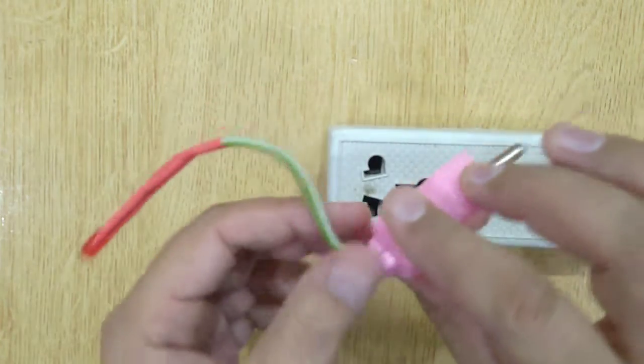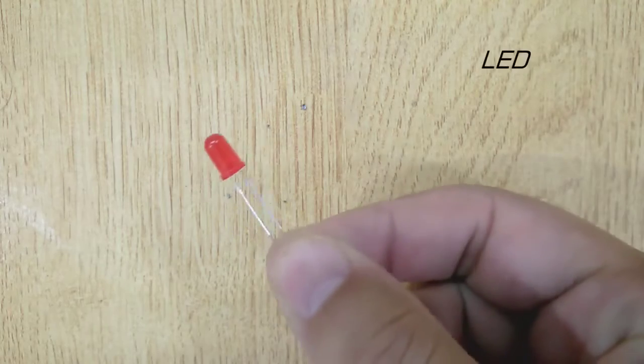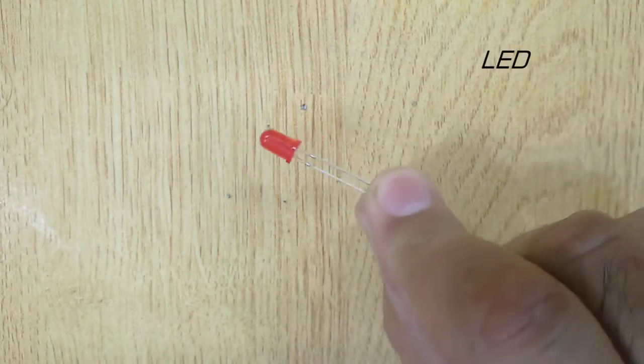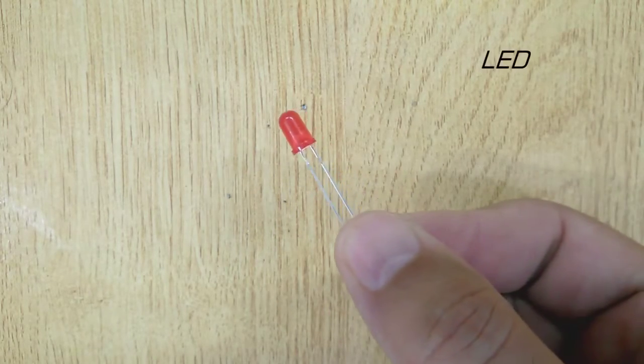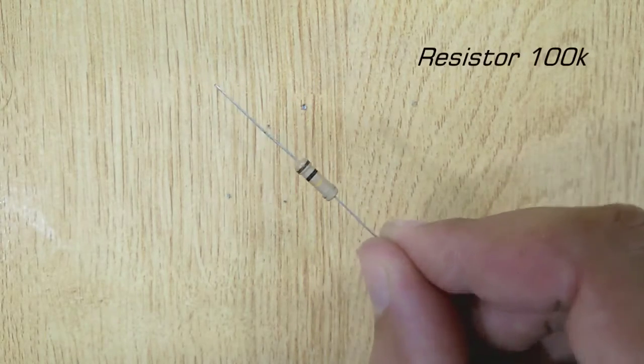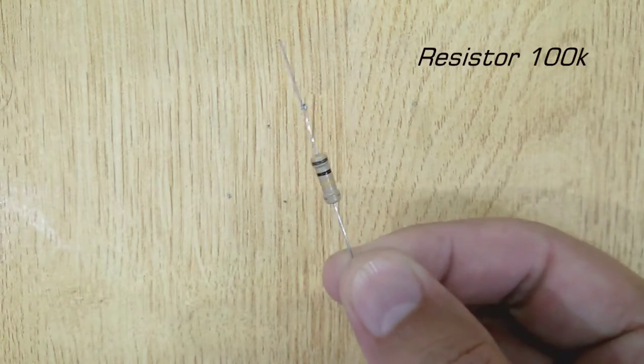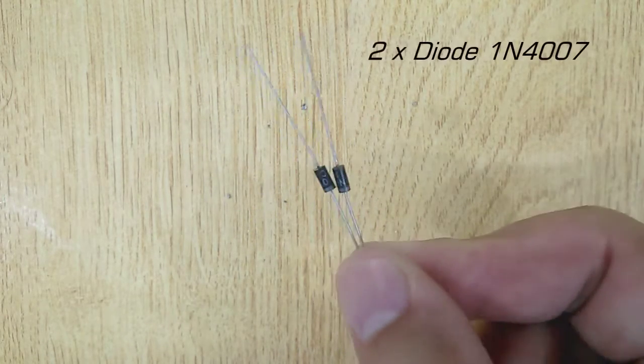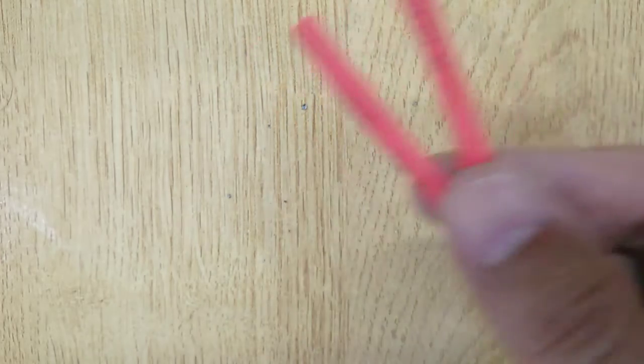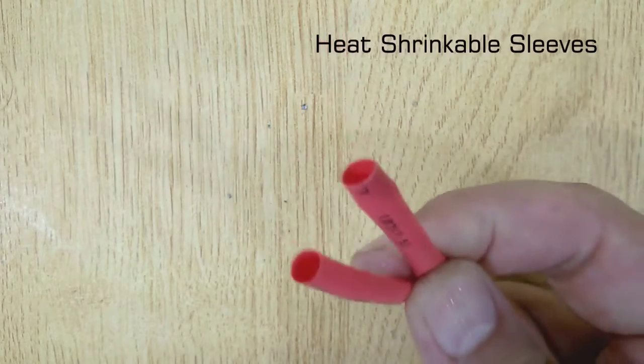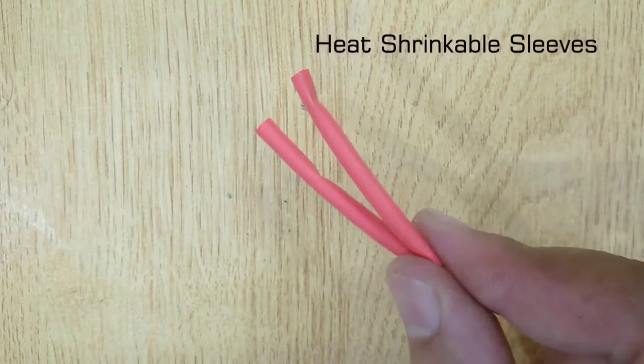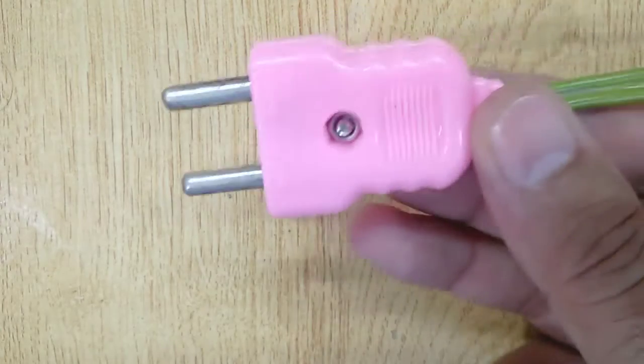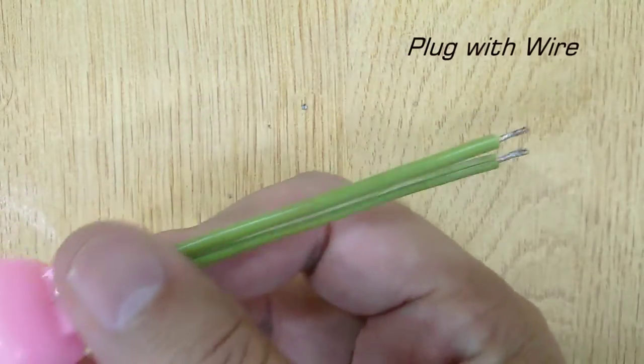For this you will need: 3V LED, 100K ohm resistor, 2 diodes 1N4007, heat shrinkable sleeves, and plug with wires.